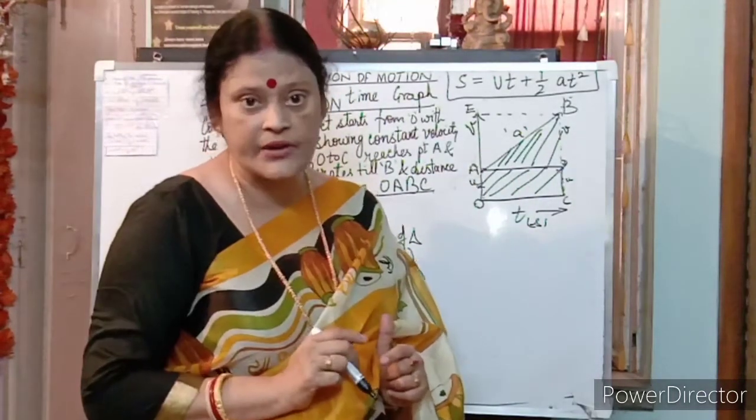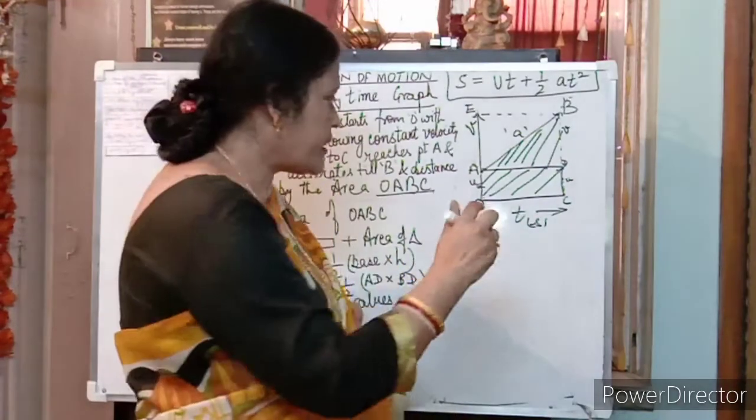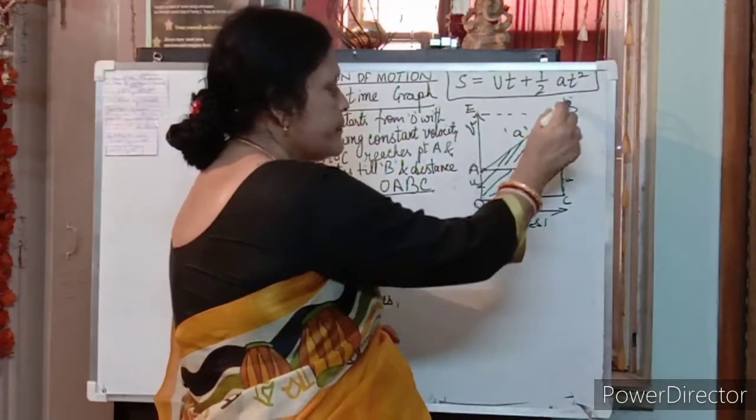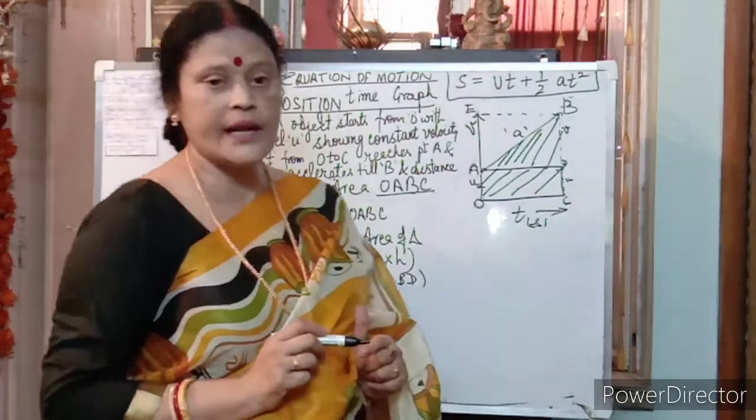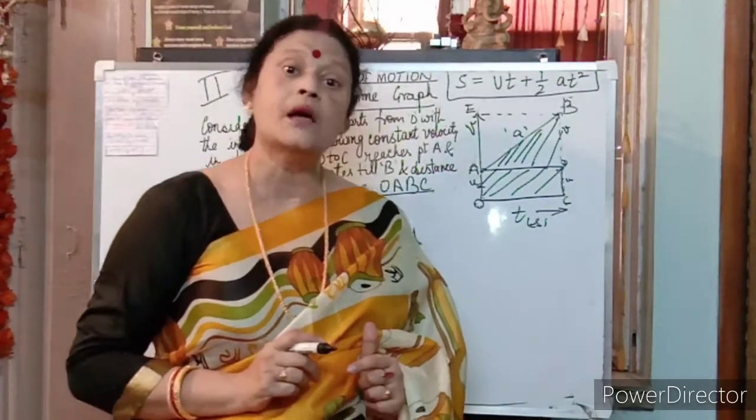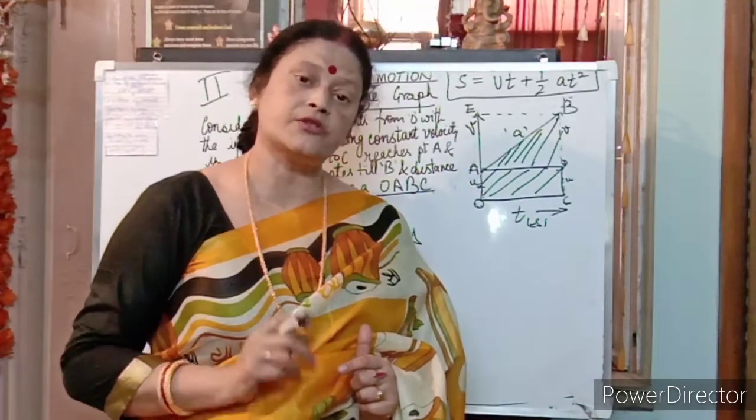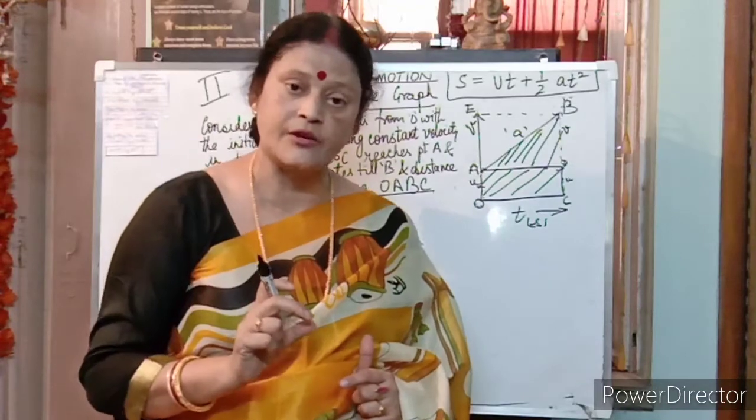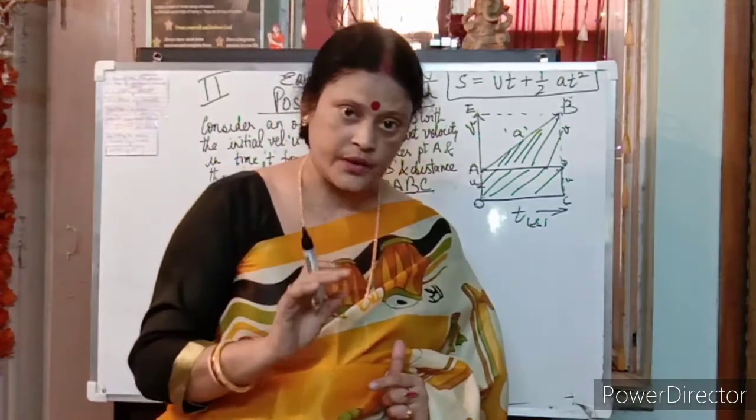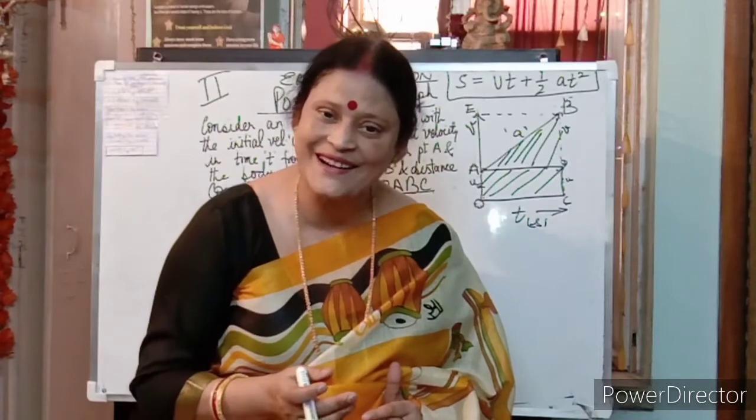So do baar usne distance cover kara. But the total area usne kya liya? O, A, B, C. Total area usne cover kara O, A, B, C. But distance jab usne cover kara to first part aapka aajayega rectangular and triangular part is the second one. Bas, abhi derivation kar le.